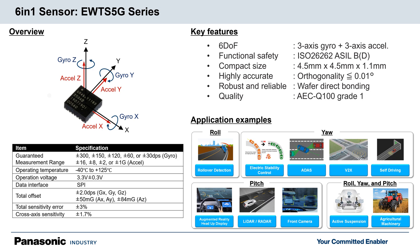The 6in1 sensor EWT-S5G series is a 6-degree-of-freedom inertial sensor that Panasonic developed. Our 6in1 sensor can detect 3-axis angular rate and 3-axis acceleration.